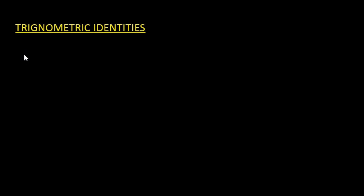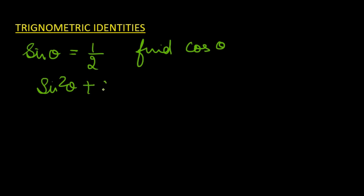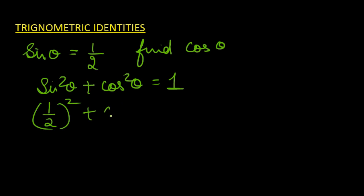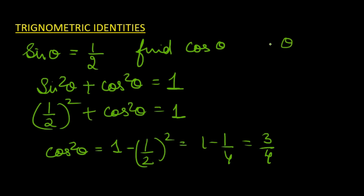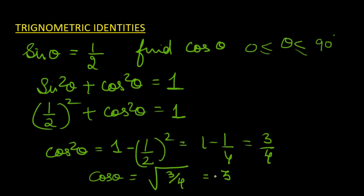It is given that sin θ = 1/2 — find cos θ. We know that sin²θ + cos²θ = 1. So if sin θ = 1/2, it can be written as (1/2)² + cos²θ = 1. So cos²θ = 1 − (1/2)² = 1 − 1/4 = 3/4. Given that θ lies between 0° and 90°, cos θ will be the positive square root of 3/4, which is √3/2. So using the identities, we can find any trigonometric ratio.